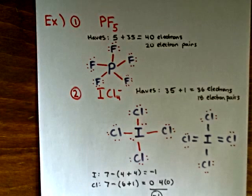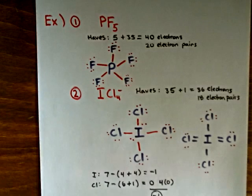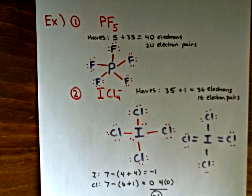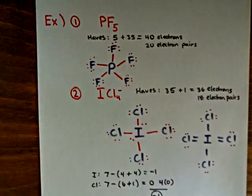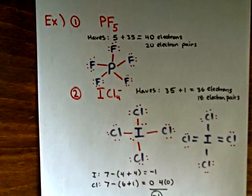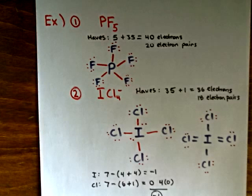You can do the formal charge calculation for the other proposed structure as well. If you do it, you'll end up with something like positive 3 on the central atom, and of course that does not make sense because that is not the overall charge on this species, confirming it is not the correct structure.